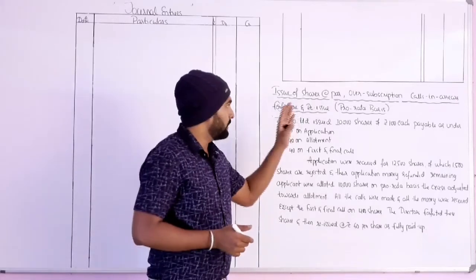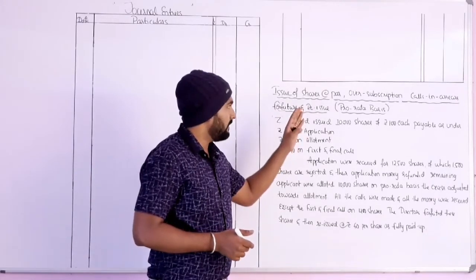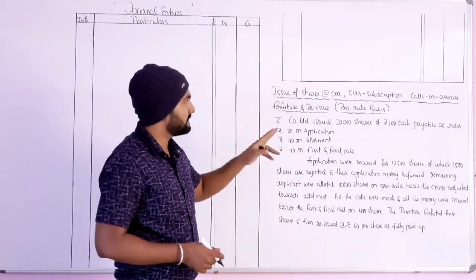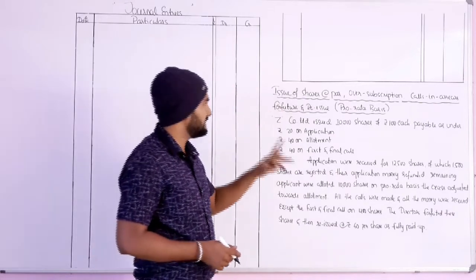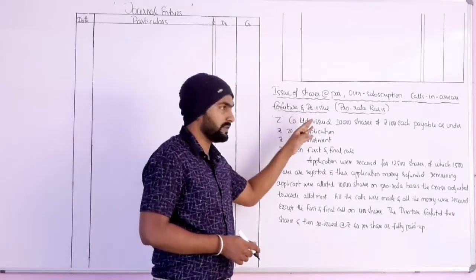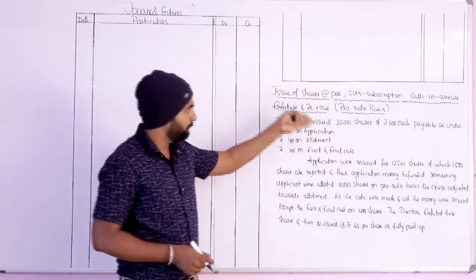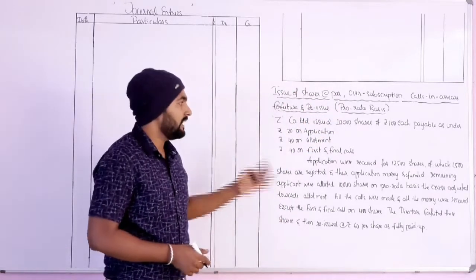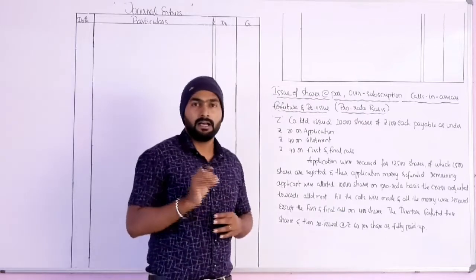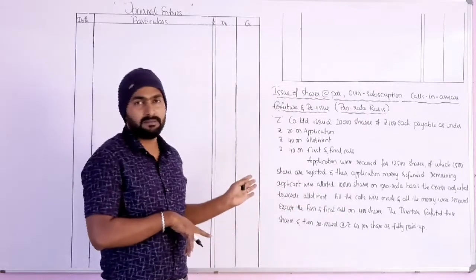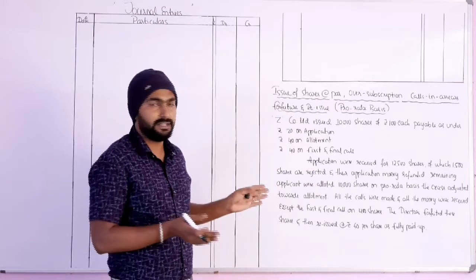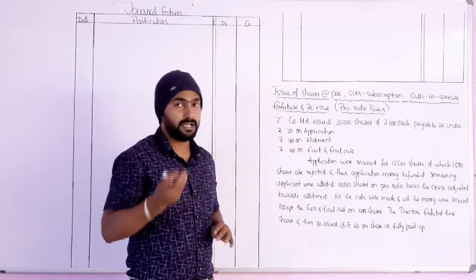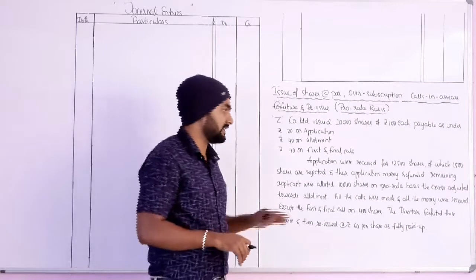In this case, pro-rata basis means shares are issued with oversubscription, calls in arrears — four features and three issues. On pro-rata basis allotment, shares are allotted, excess applications are allotted as covered in previous video classes. In this case, excess application is allotted on pro-rata basis.